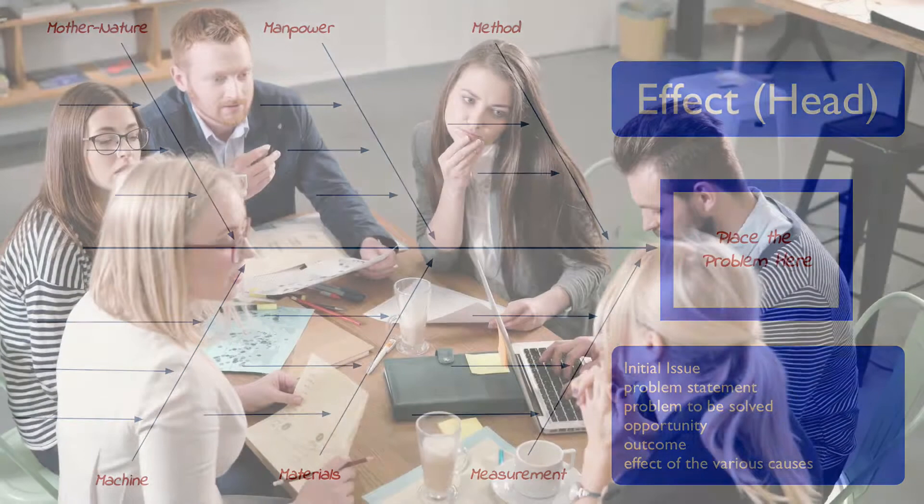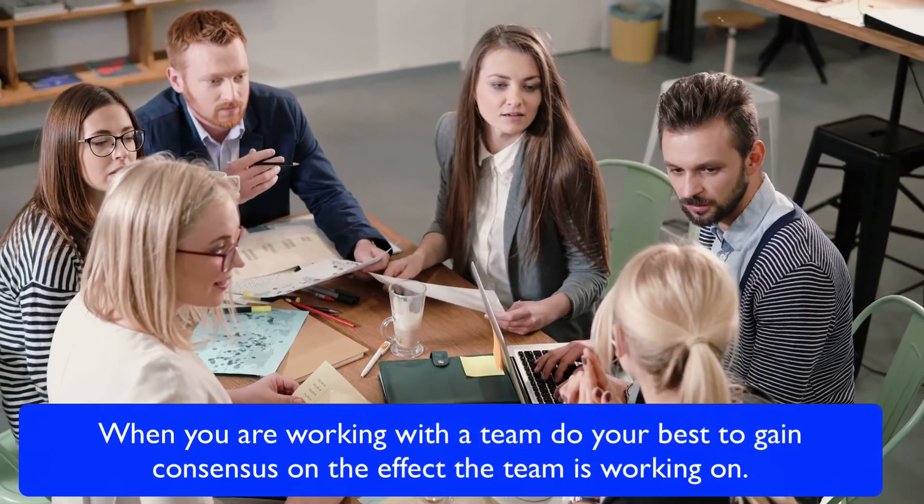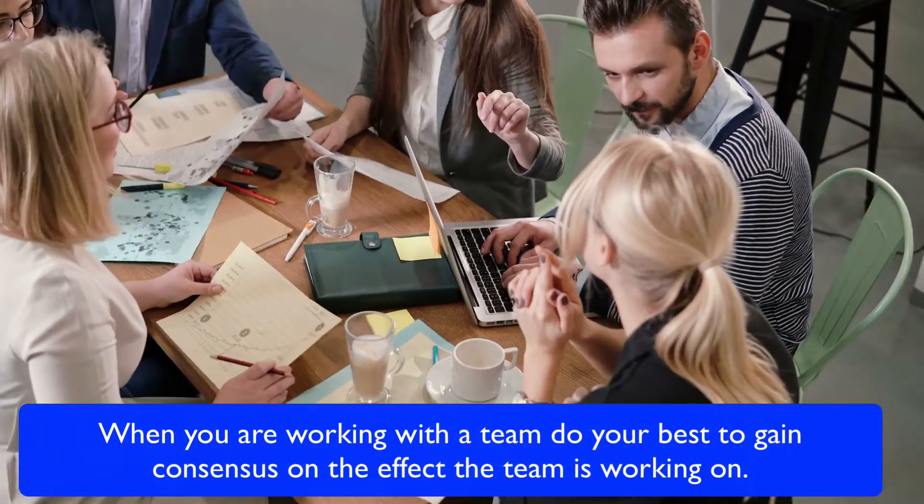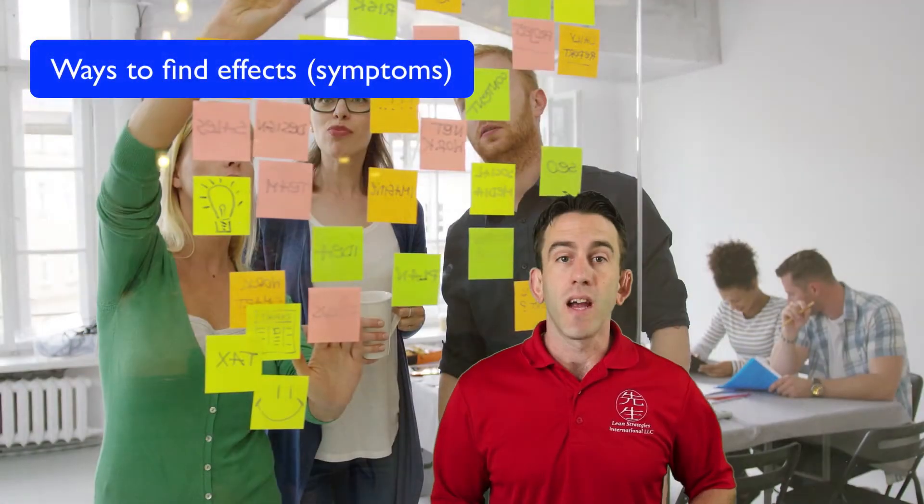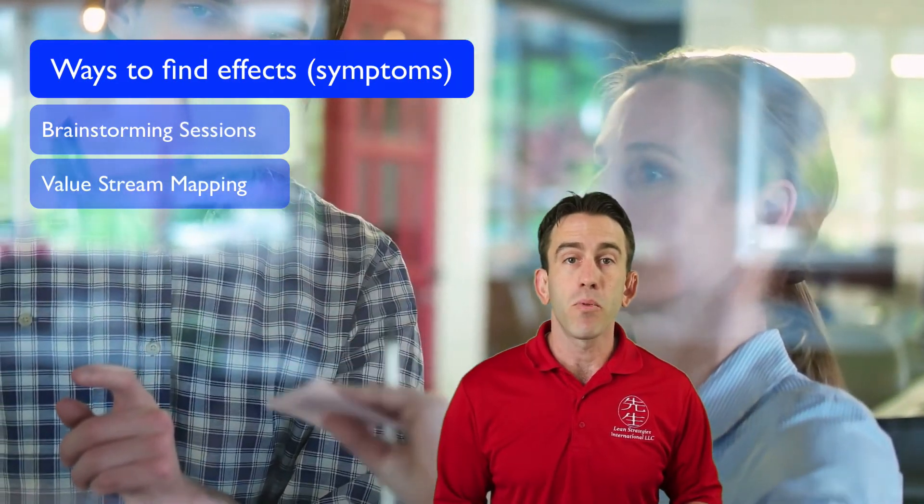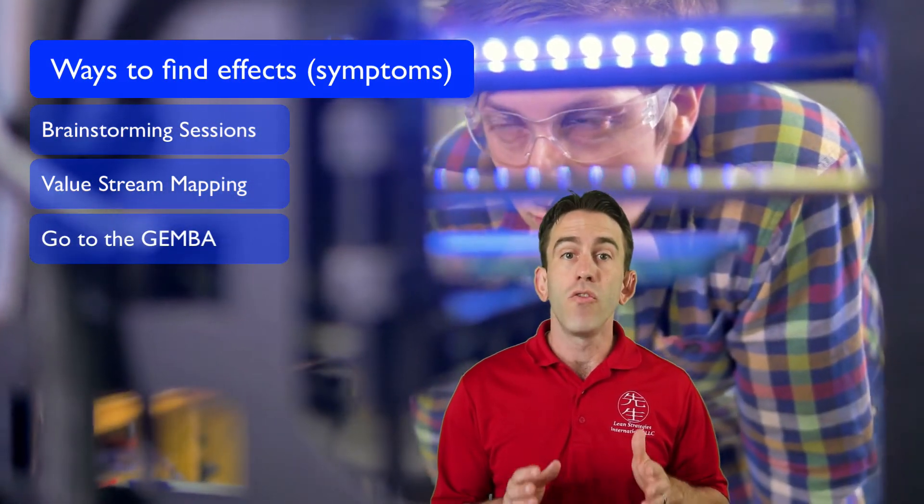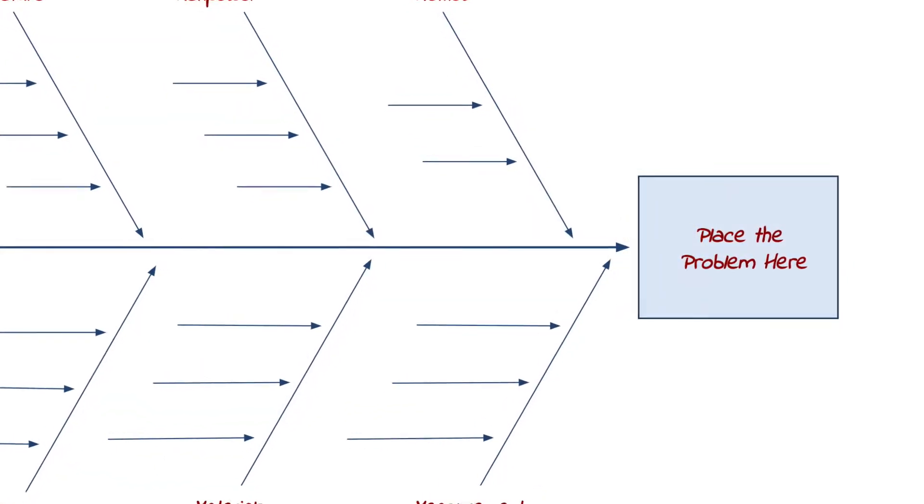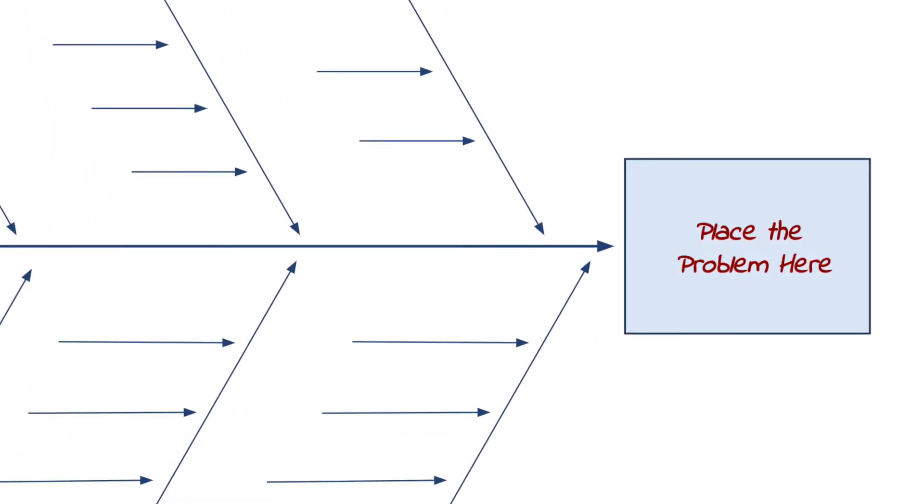When you are working with a team, do your best to gain consensus on the effect that you and your team are working on. To find this effect, teams may have brainstorming sessions, pull issues from value stream maps, or see the issue firsthand at the Gemba. Ultimately, the head defines what you and your team will be working on.